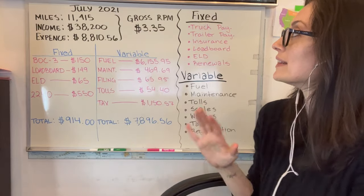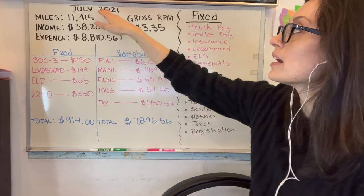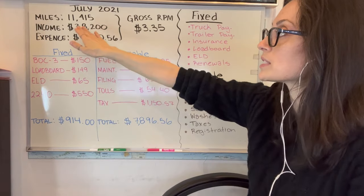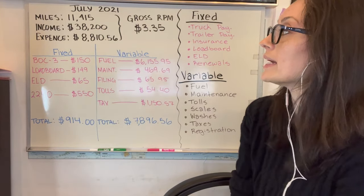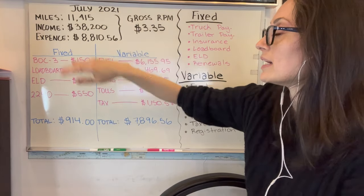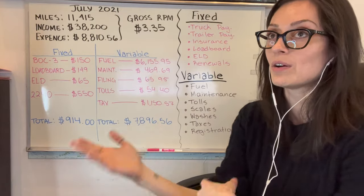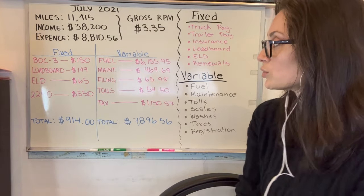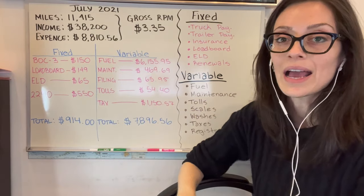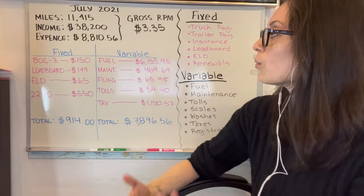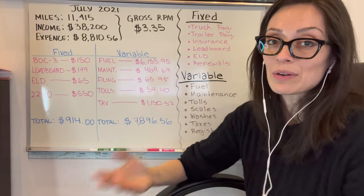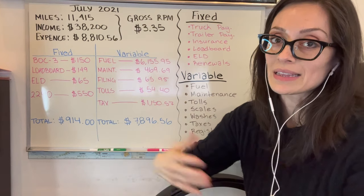I'm going to be using our company numbers. We're going to be using that owner-operated truck from July of 2021. The miles were 11,415 miles. The total income was $38,200 gross. The expense was $8,810.56. The gross rate per mile — if you take the income and divide it by the miles — was $3.35 per mile, including deadhead and all the miles accrued while driving the truck. Now I have the fixed versus variable costs. In the fixed costs, I actually don't have insurance, because we pay for insurance for 10 months and then get two months free. The reason it appears free is because we put a down payment at the start of the policy — so we're actually paying for those two months upfront. Nothing is free in this life, folks.